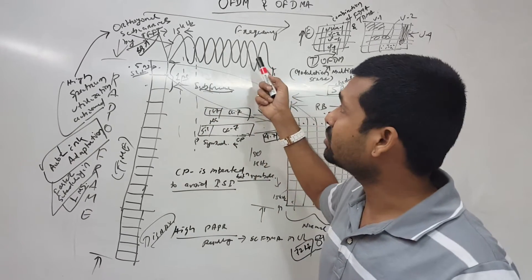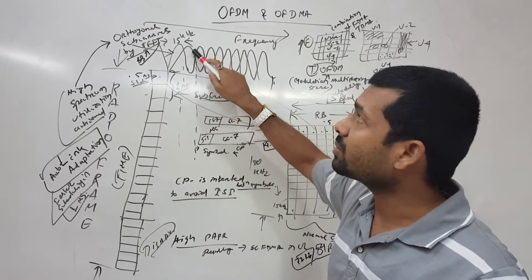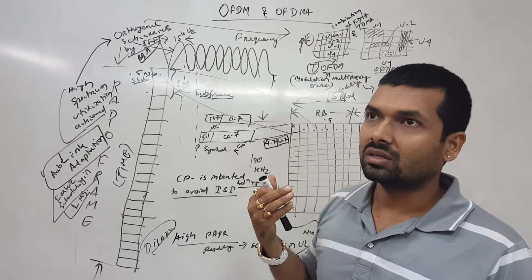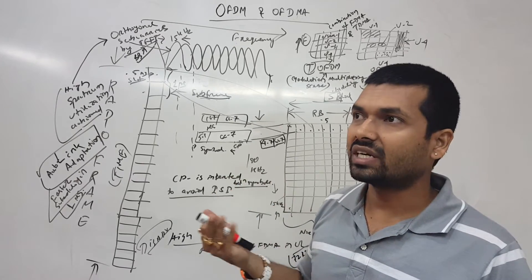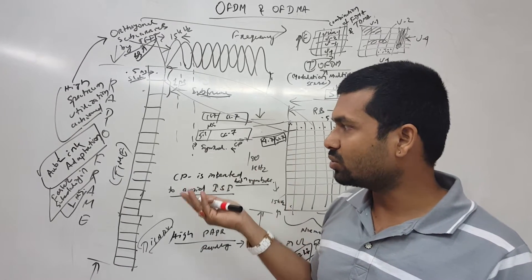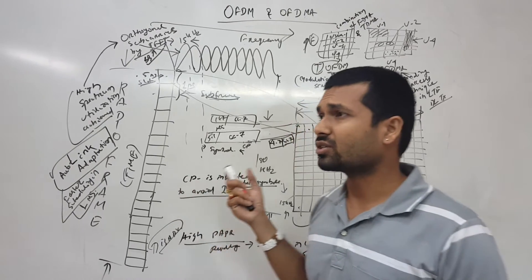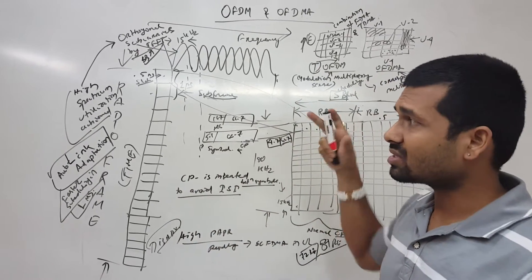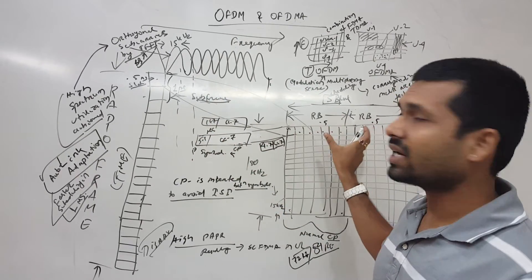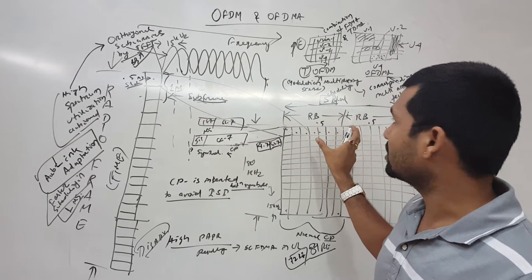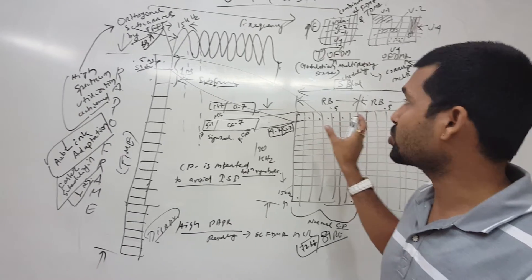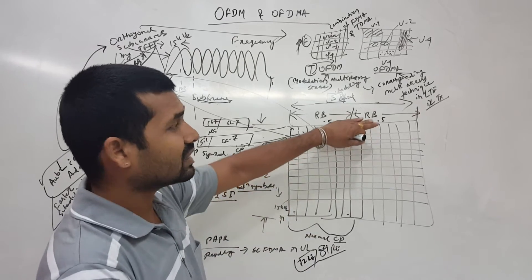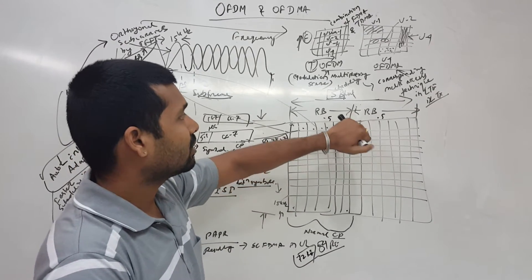In the frequency domain we are having 15 kHz subcarriers. The minimum unit that is sent by the scheduler in the downlink by the node-based scheduler is a scheduling block. One scheduling block in one TTI consists of two resource blocks. In every one millisecond we transmit this minimum data: two resource blocks.